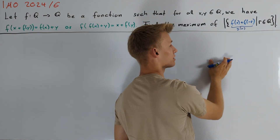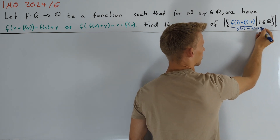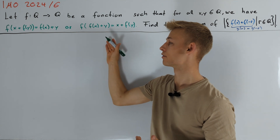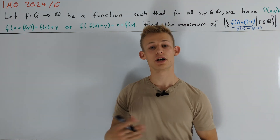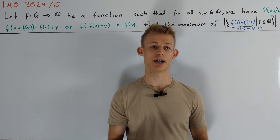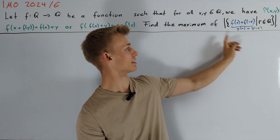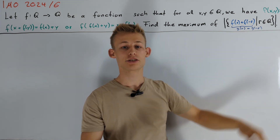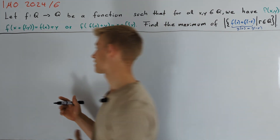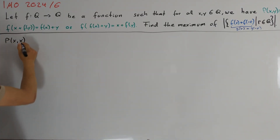We can directly notice that g(r) is also equal to g(-r). Secondly, let's denote this assertion with P(x,y). Before I start with the solution, I want to note that in the actual paper, the students were also asked to prove that this number is finite, so they could work with that knowledge.